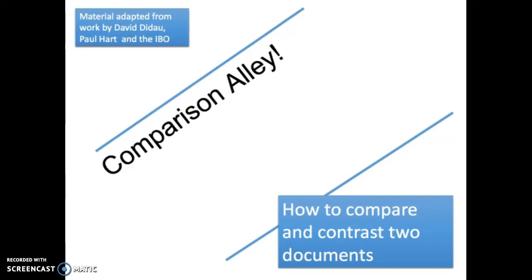Hi there. This PowerPoint is designed to help IB history students with their Paper 1, Question 3, the compare and contrast question. The material in the PowerPoint is based on the work of David Dadao, taken from his website The Learning Spy, and much of the material also comes from Paul Hart's work published in his Paper 1 Bible.